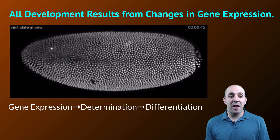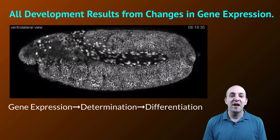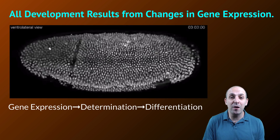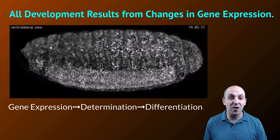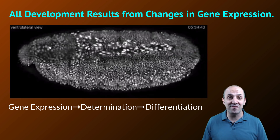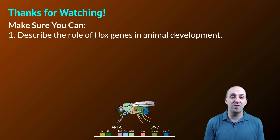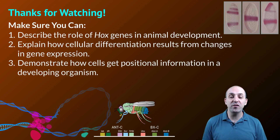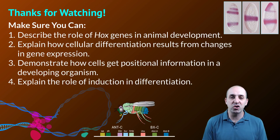These are very broad strokes of developmental biology, but the important take-home point is that all development results from changes in gene expression — changes that are determined spatially and temporally in the developing organism, leading to the determination of genetic fates of cells and the differentiation of all the different types of cells in a multicellular organism. Make sure you can describe the role of Hox genes in animal development, explain how cellular differentiation results from changes in gene expression, demonstrate how cells get positional information in a developing organism, and explain the role of induction in differentiation.